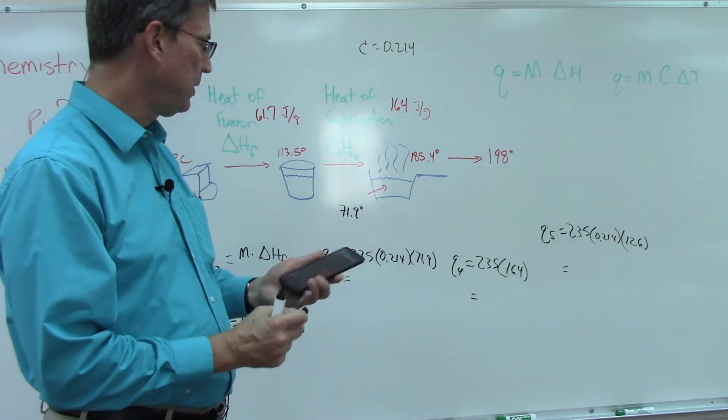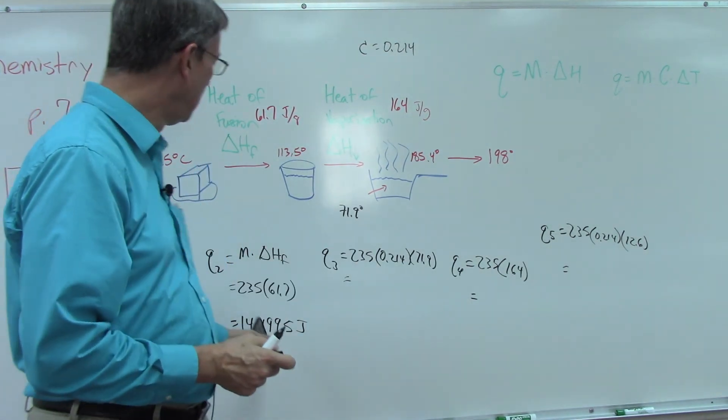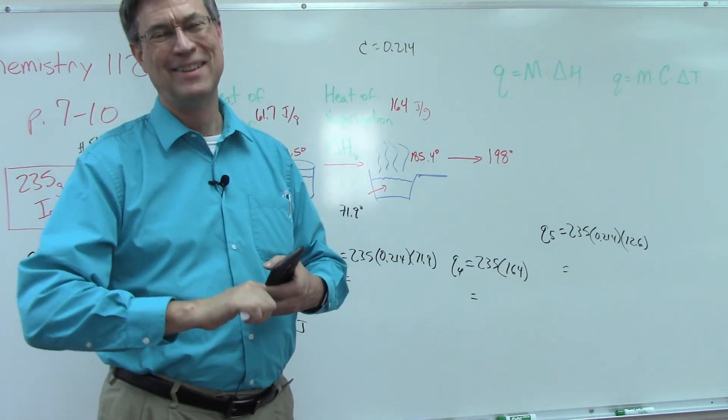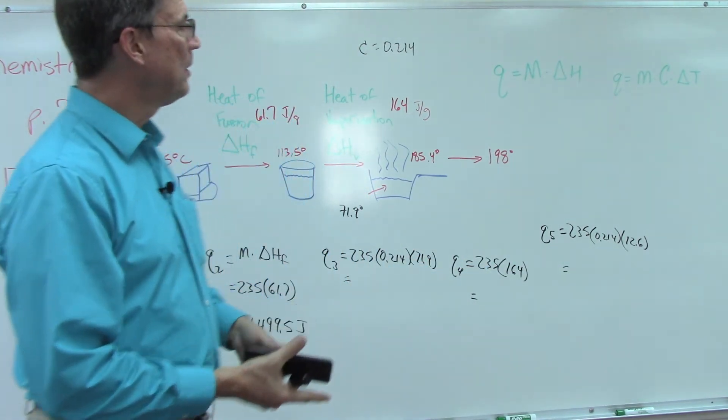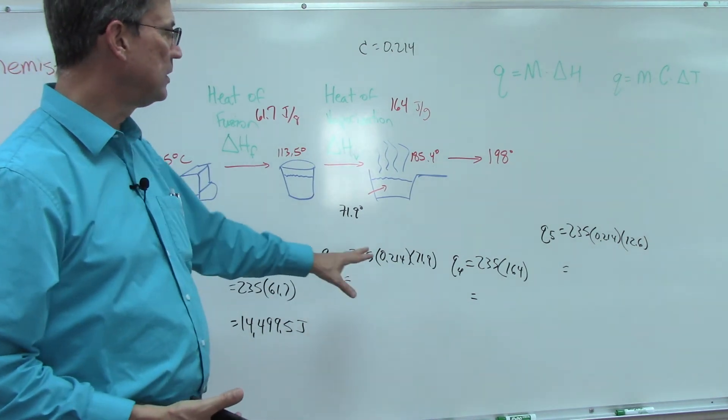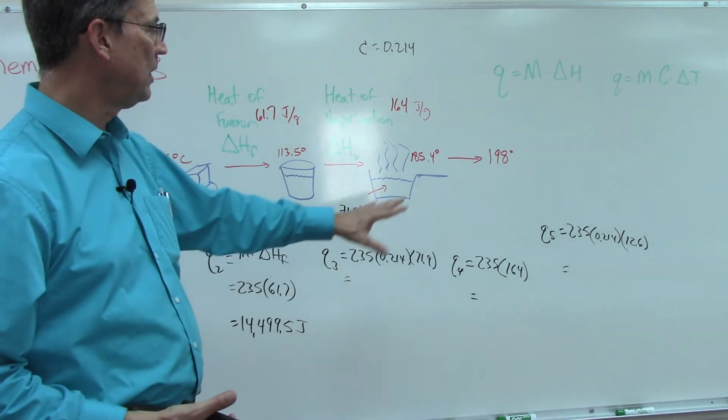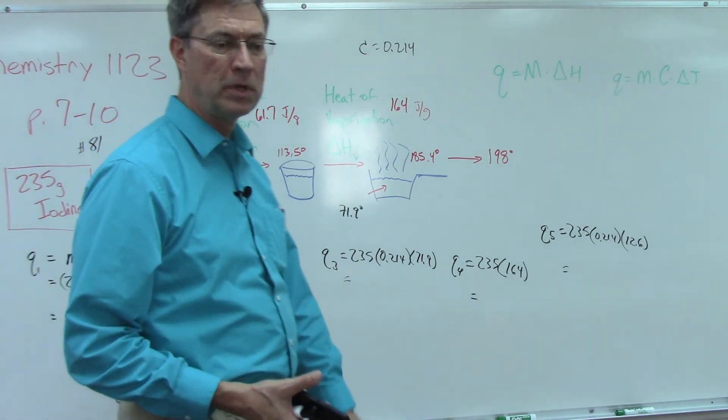Once you've multiplied all those out and you get a number in joules, then the last step is you add all of these five things together. Think about it: each step wasn't that hard. It seemed mind-boggling when you started, but hopefully now it makes sense. Each step by itself, add them all up and you get a big number.